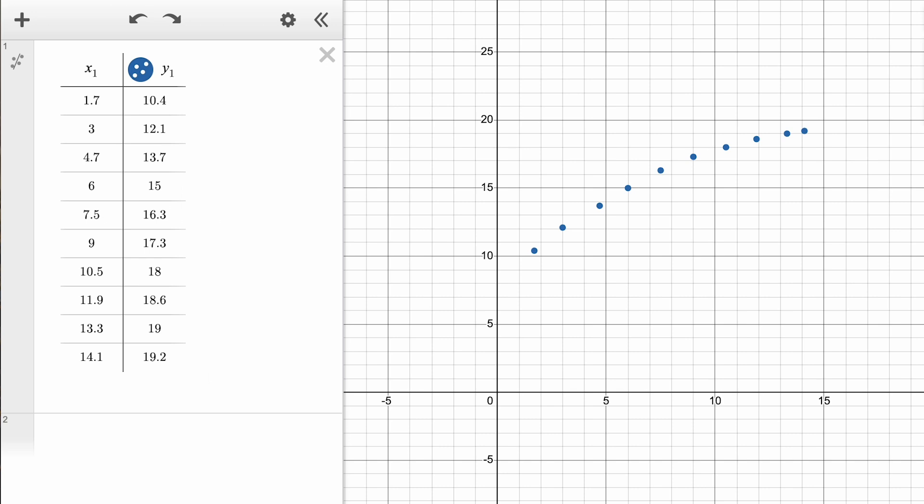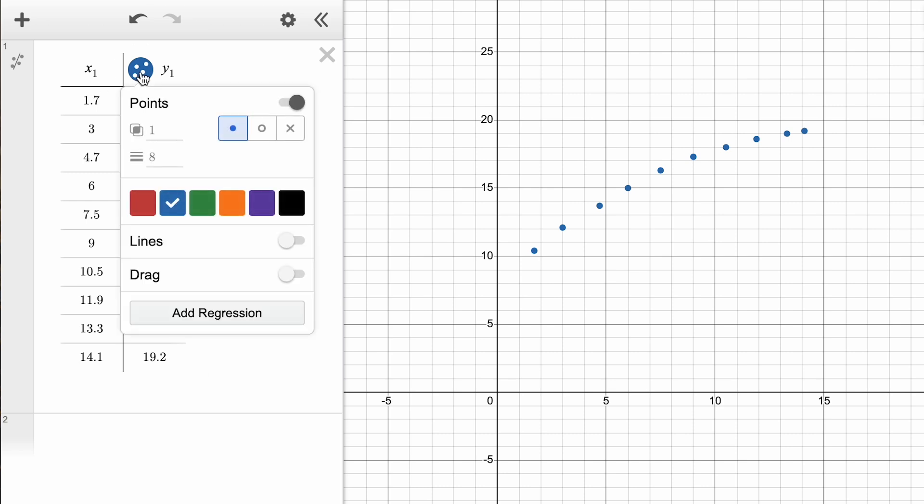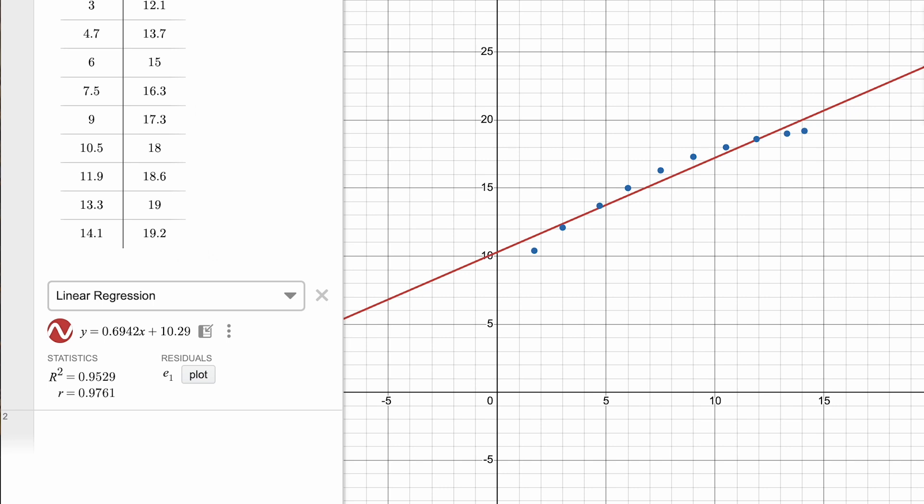To create a regression, click the Add Regression icon to the left of your expression, or open the Options menu next to your Y variable and select Add Regression, located at the bottom of the menu. This will instantly add a linear regression below your table.